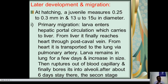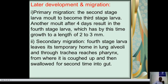After about six days in the lungs, the second-stage larva molts to become the third-stage larva. Another molt after four days results in the fourth-stage larva, which by this time has grown to a length of 2 to 3 mm. Secondary migration then begins: the fourth-stage larva leaves its temporary home in the lungs and travels through the trachea and pharynx, from where it is coughed up and swallowed for a second time into the gut.